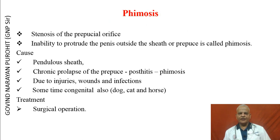Phimosis is the stenosis of the preputial orifice with inability to protrude the penis outside the sheath or prepuce. Causes include pendular sheath, chronic prolapse of the prepuce, posthitis resulting in phimosis, injuries, wounds, infection, and sometimes rarely congenital causes. The treatment is surgical correction.